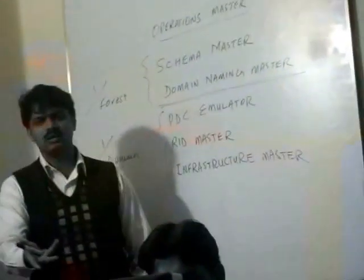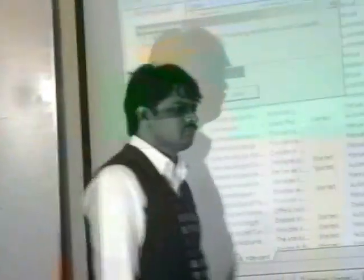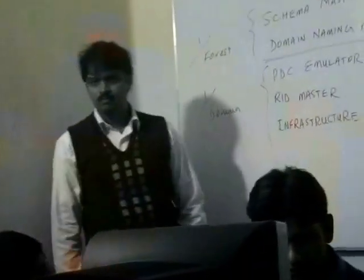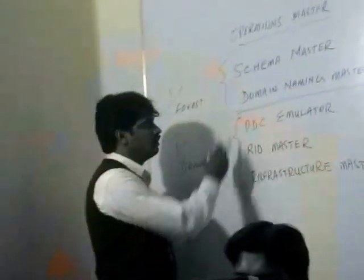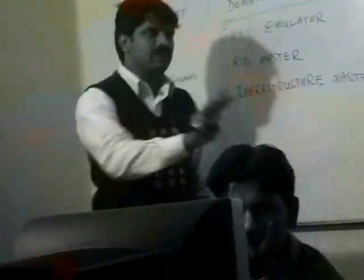The most simple example is Prime Minister and Chief Minister. Schema Master and Domain Naming Master relate to Prime Minister. All three other roles relate to Chief Minister. These three are Chief Minister roles, these two are Prime Minister roles. In one forest with three domains, how many total roles will there be? Tell me — in one forest, three domains — how many total number of roles?